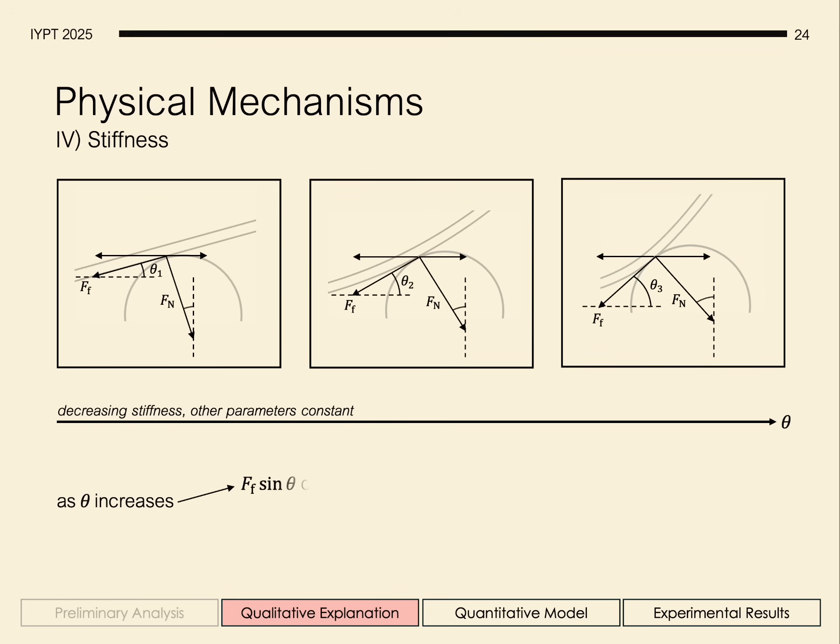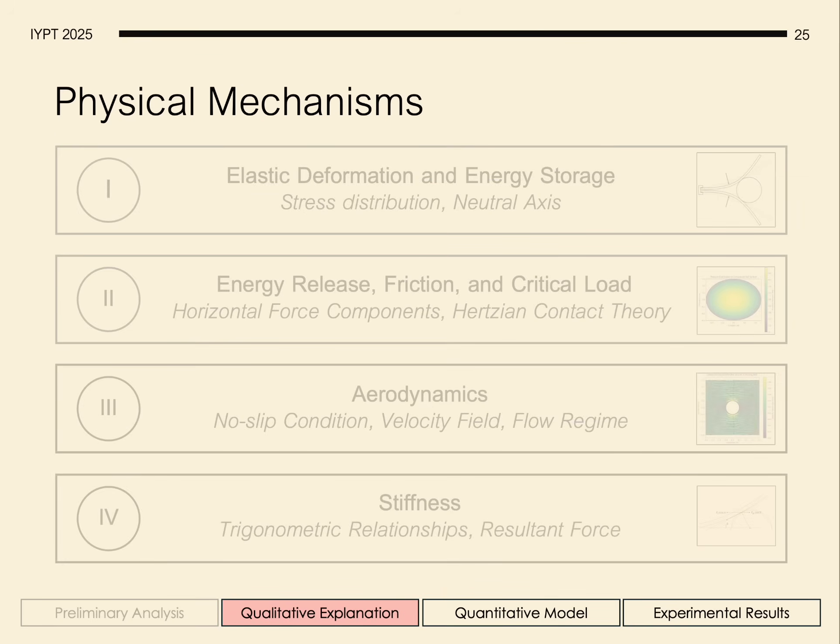As theta increases, the horizontal component of the resistive forces decrease, while those of the driving forces increase. And ultimately, a lower stiffness results in a higher initial net force. And that concludes our qualitative explanation.